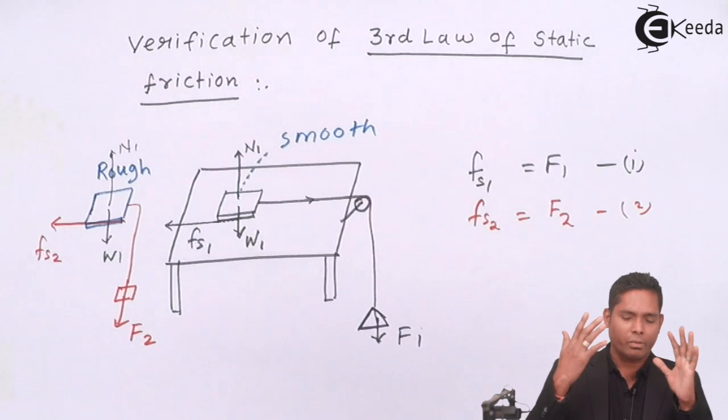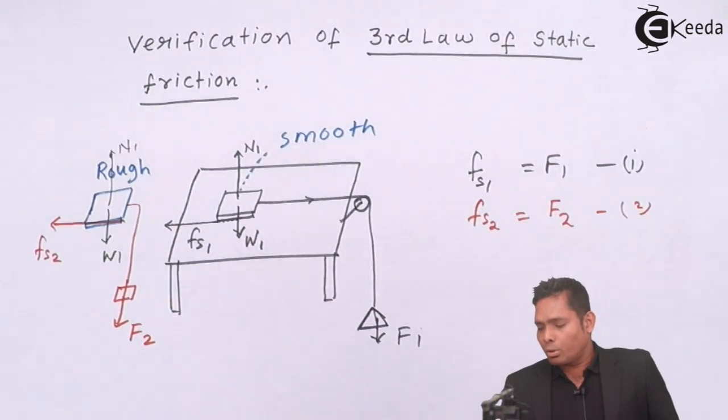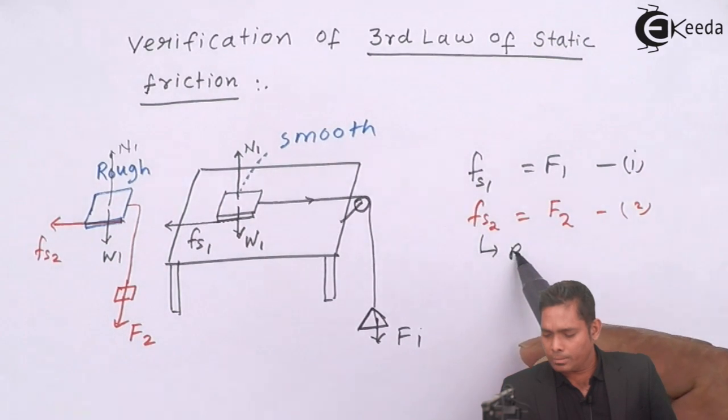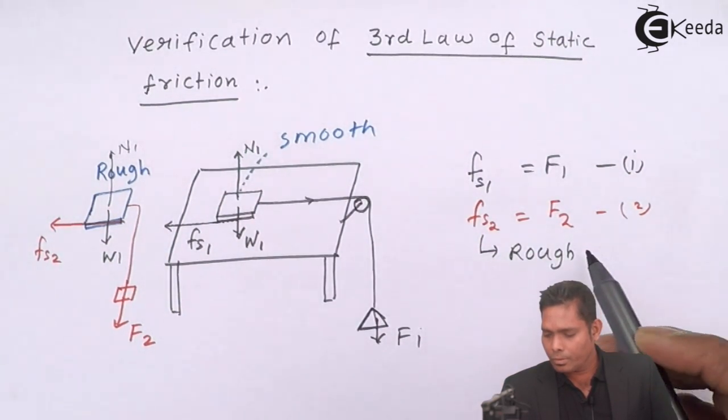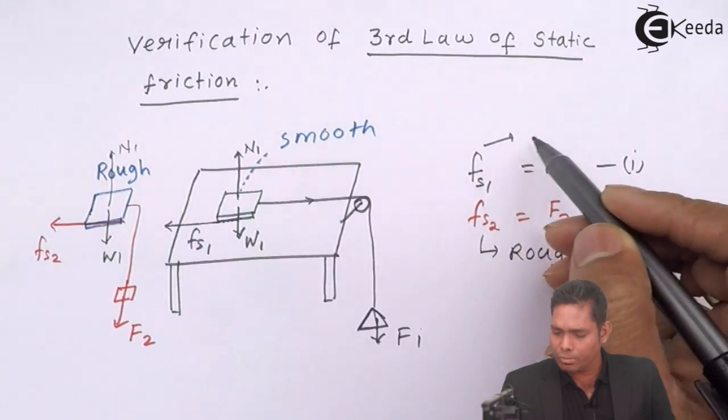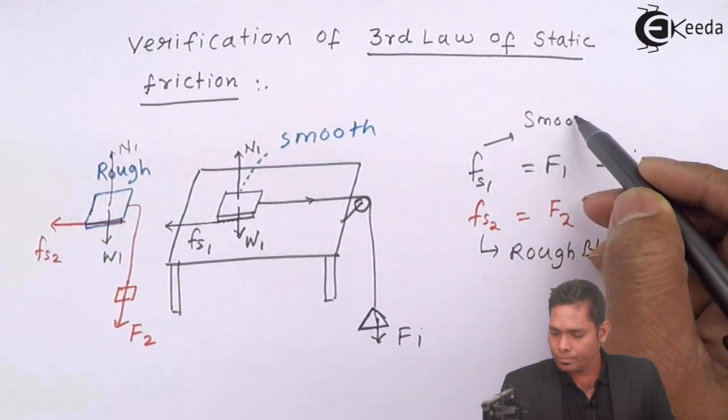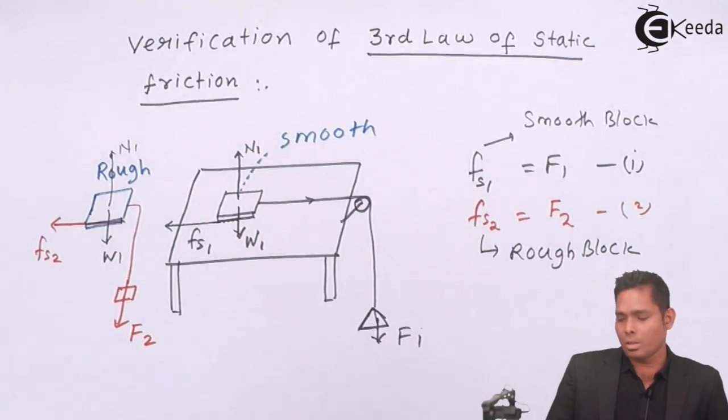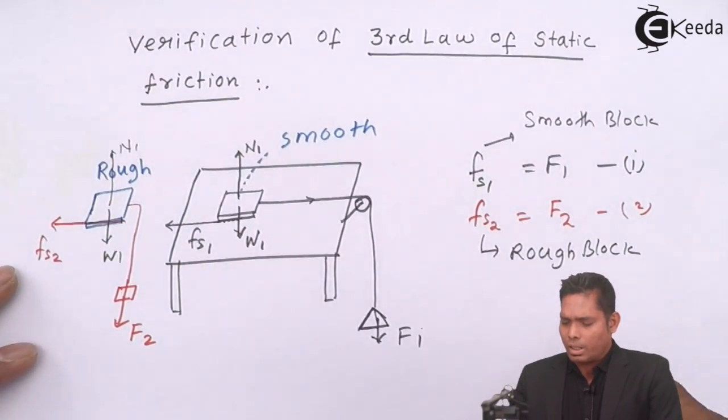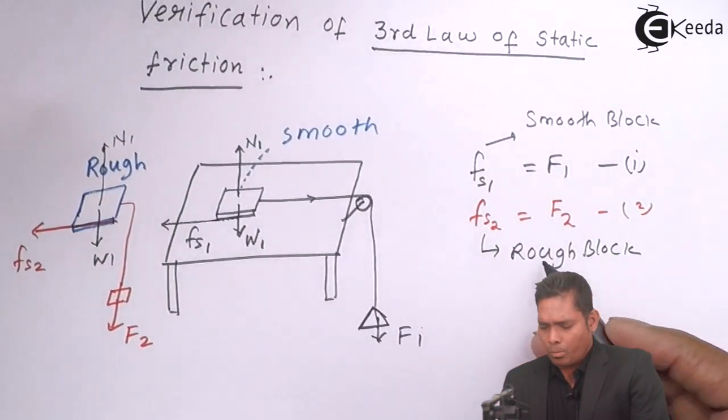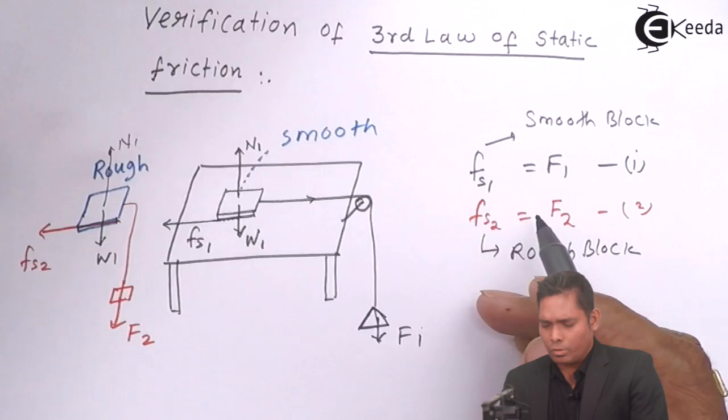So from here we come to the conclusion: this is for a rough block and this was for smooth block. Our conclusion is that more the roughness, more the force of static friction.